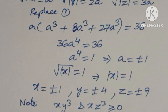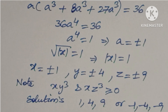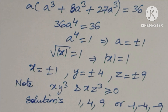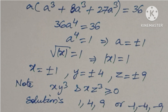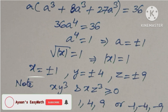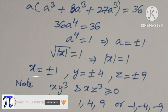The solutions are (x, y, z) = (1, 4, 9) or (−1, −4, −9). I hope this information is valuable for you. Please subscribe the channel, share it with your friends, and thank you for watching NCG Max.